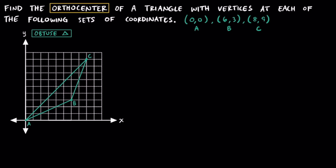Because points A, B, and C form an obtuse triangle, we know that the orthocenter is going to be located outside of the triangle. If we had an acute triangle where all three angles are less than 90 degrees, then the orthocenter is located inside the triangle. And if we had a right triangle, the orthocenter will be located on the actual triangle. Now that we can visualize this a little more clearly, let's go a little bit further.